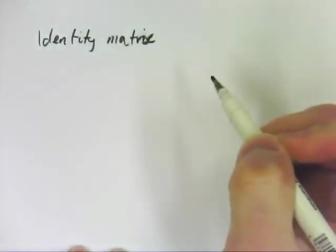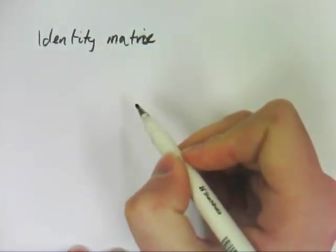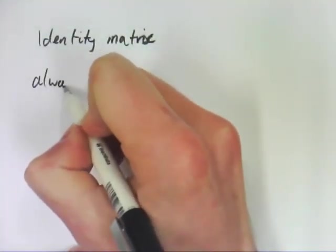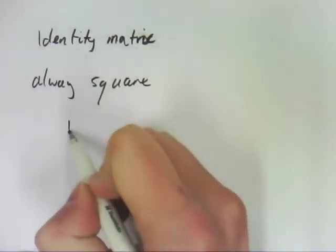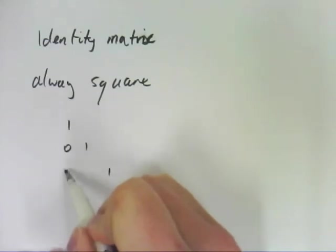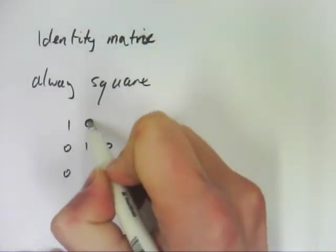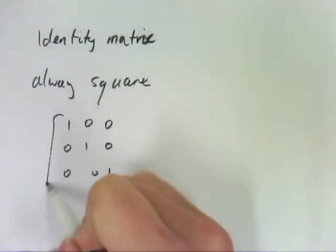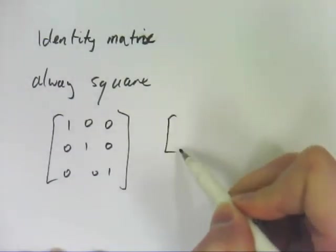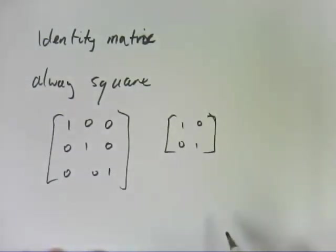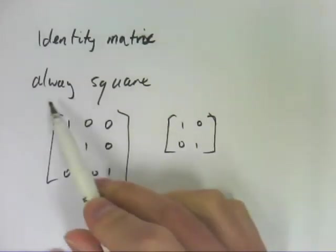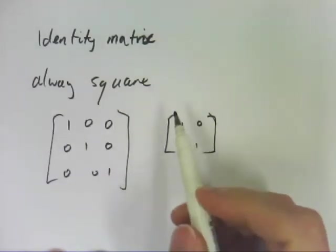So the identity matrix is always square. And it has 1s going diagonally and 0s everywhere else. So this is a 3 by 3 identity matrix. A 2 by 2 identity matrix would look like this. So they're both identity matrix. They're always square. And this does happen.